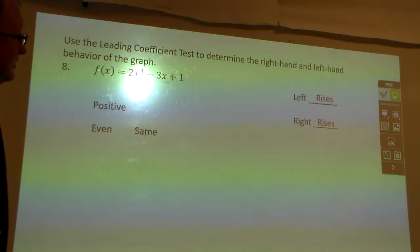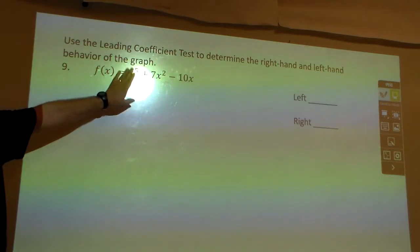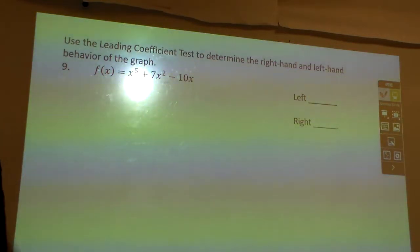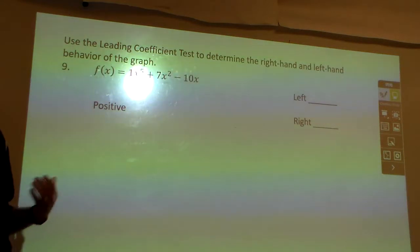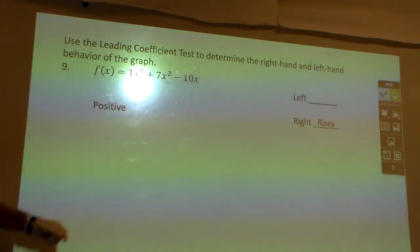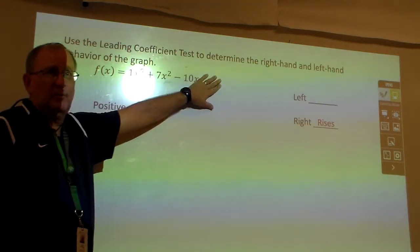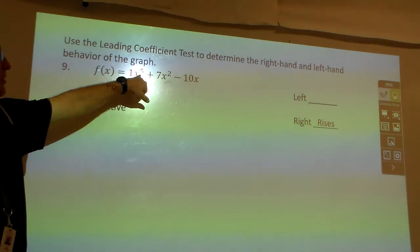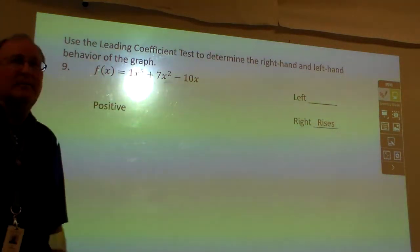As I look at number 9, notice, still do the same thing. What's the number in front of x to the 5? It's a 1, and what is 1? Is it positive or negative? Positive. So guess what the right side has to do? Rise. The right side rises. Now I'm going to look at the exponent on the highest one. These don't matter at all, got it? They don't matter at all. What is the exponent here? Odd. Well, if it's odd, that means the opposite.